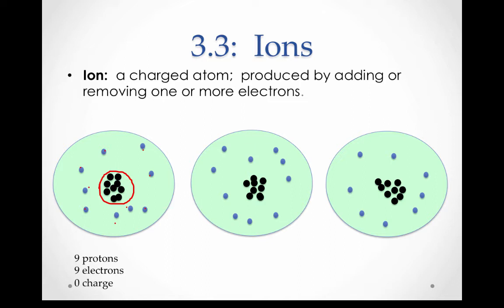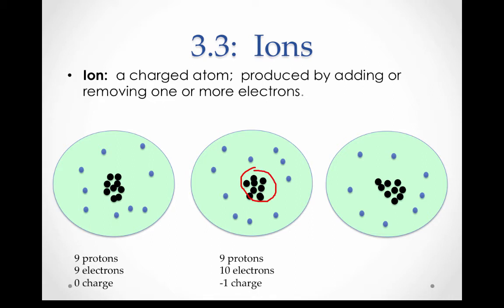However, look at the second atom here. We still have nine protons, but instead of nine electrons, we have ten electrons. Because we have one more electron than protons, we have a negative one charge, since we have nine positives and ten negatives.